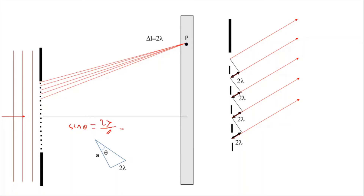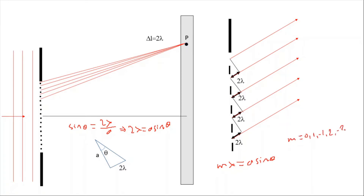So we can write tangent theta equals sine theta, and for this case sine theta equals two lambda over a, giving us two lambda equals a sine theta. If the path difference is three lambda, we write three lambda equals a sine theta. Generalizing, the formula is m lambda equals a sine theta, where m equals zero, one, negative one, two, negative two, and so on.